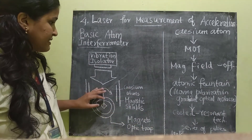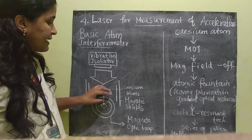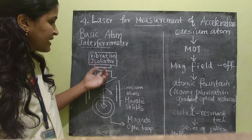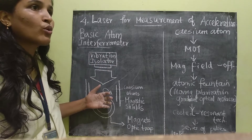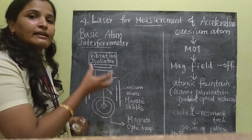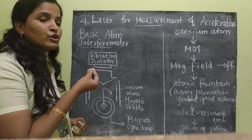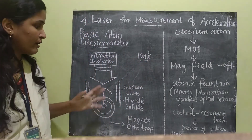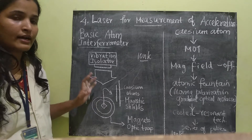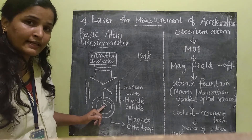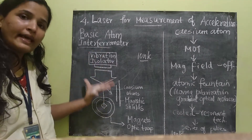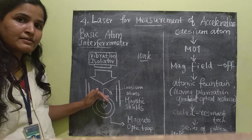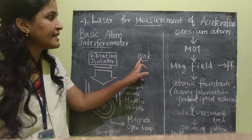During this time, all the atoms are in the atomic fountain state. They are cooled by using a series of pulses. Once cooled, all the cesium atoms are maintained at an internal temperature of 10 nanokelvin. This is the temperature each cesium atom should have. From the magneto-optic trap, the cesium atoms are allowed to flow like a fountain, and at this point, a series of pulses are given to cool the cesium atoms and to maintain the internal temperature of 10 nanokelvin.